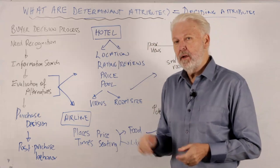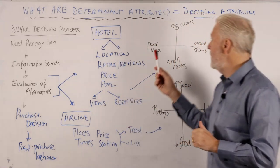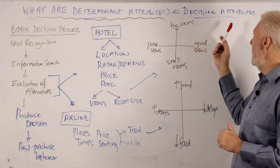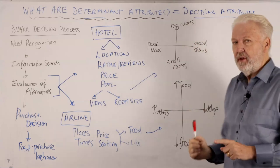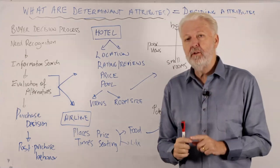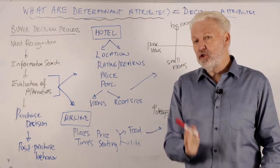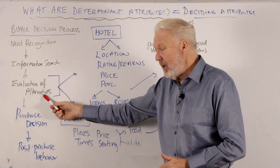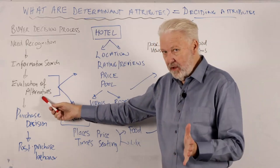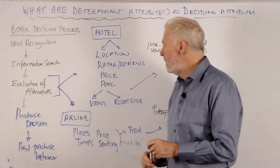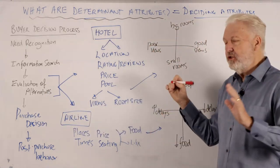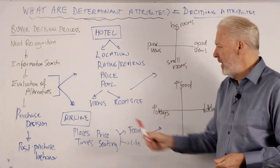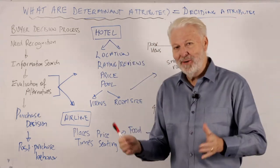Determinant attributes are the deciding attributes — they're the ones that consumers will be using to go from evaluation to choice. I've got two examples here: a hotel and an airline.